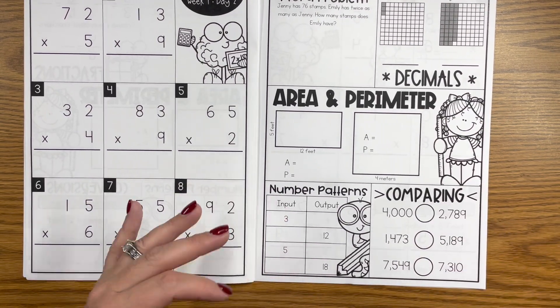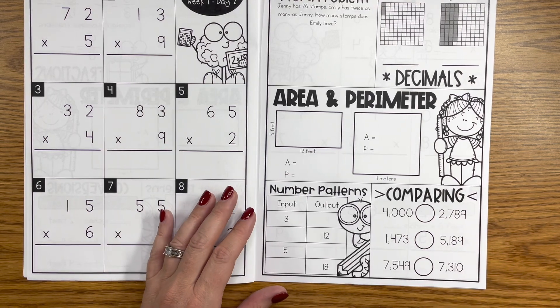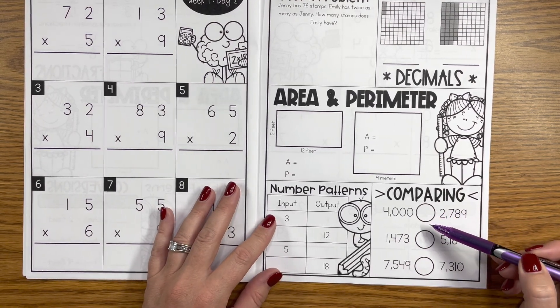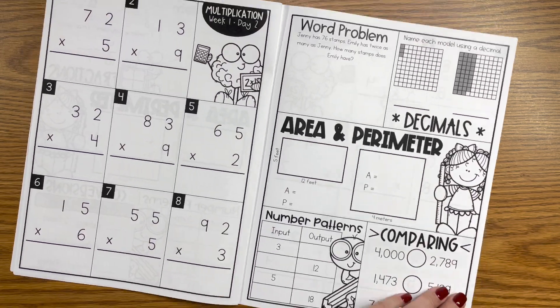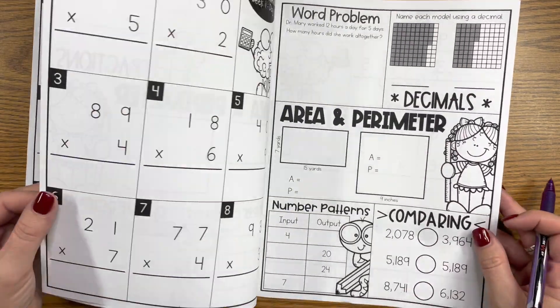And the same with comparing larger numbers. We can do it when we practice it. But if we don't practice it, we don't even know what greater than or less than means. We don't know what equal to might mean. And so we just have to practice it.